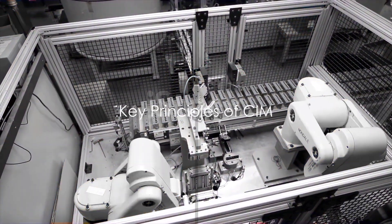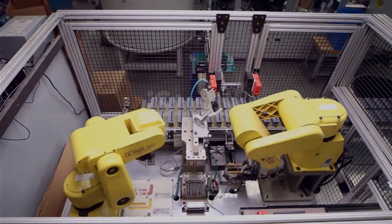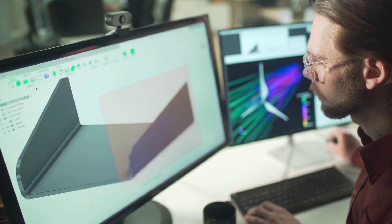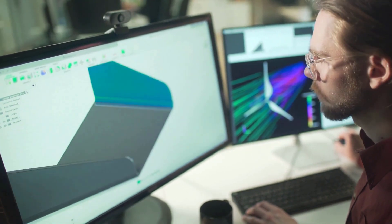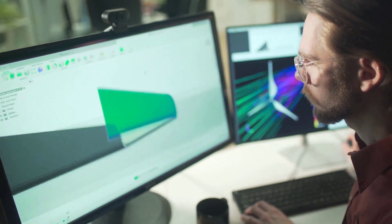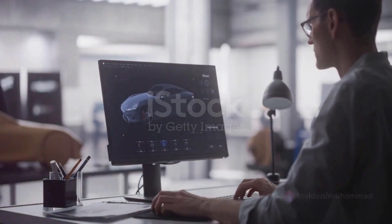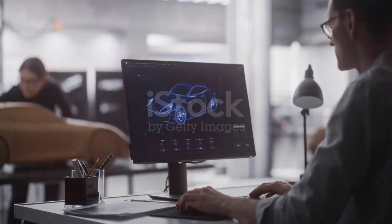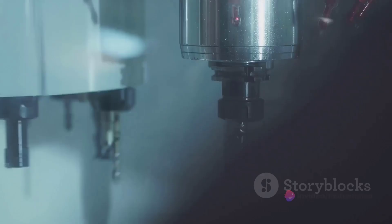Let's delve a little deeper. CIM operates on a few key principles. Firstly, there's the Computer-Aided Design, or CAD. This is where the product is designed on a computer. The computer not only allows for precise measurements and intricate designs, but also allows for easy modifications and improvements.